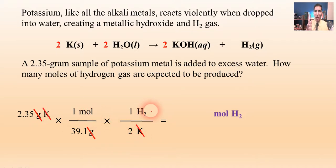Now, normally we have a step three, which is convert to final unit. But we don't have to do that here, do we? Because our final unit is moles. So we can stop right here and do the arithmetic. So 2.35 divided by 39.1 divided by 2. So the answer is about 0.0301 moles of hydrogen.